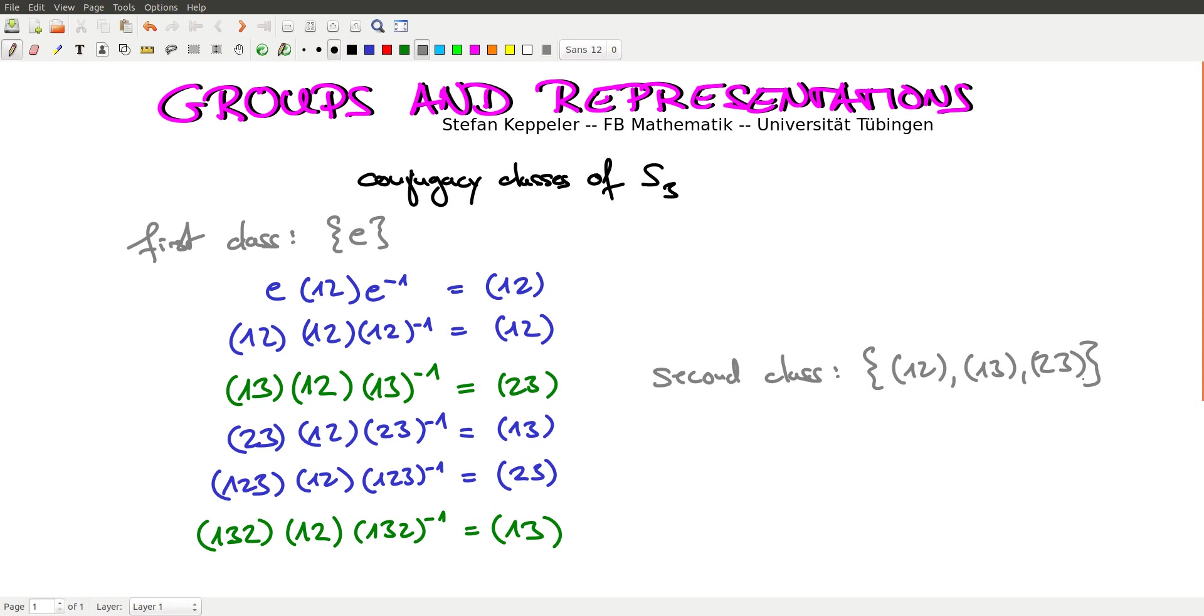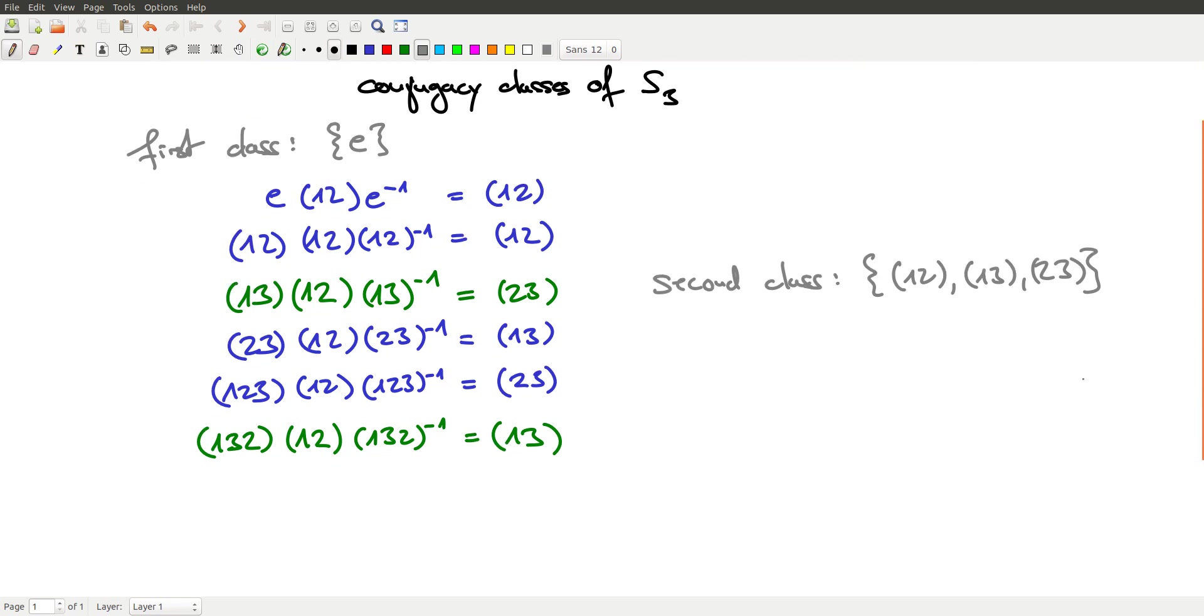And now there are two elements left, the cyclic permutations. We can just go ahead and look at one of these, let's say (1,2,3), and then we conjugate with (1,2).